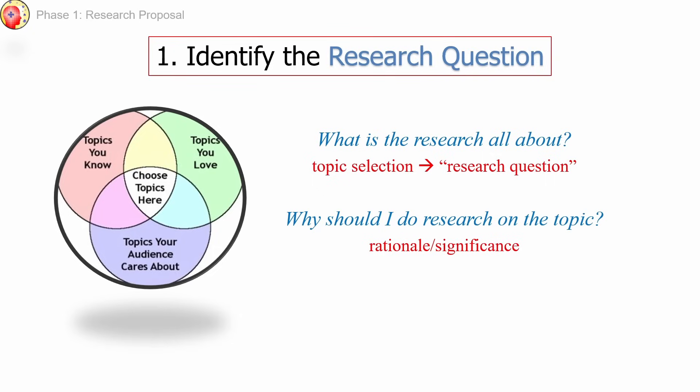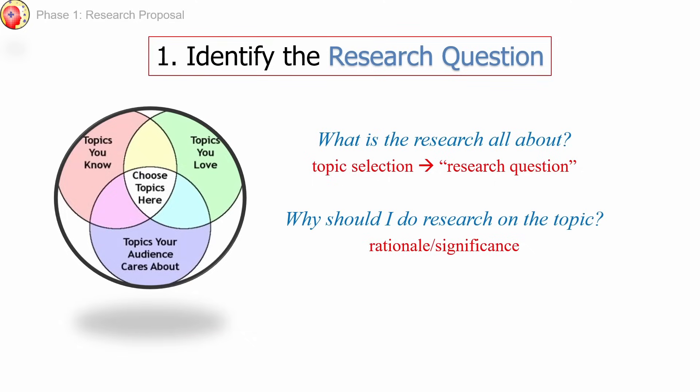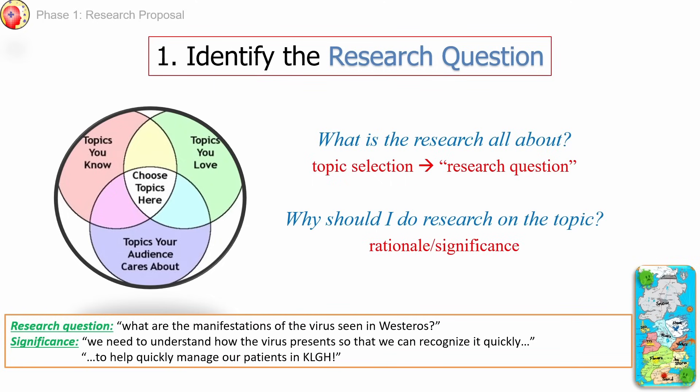Topic selection should lead to the so-called research question, which is often stated as a question about what your topic is all about. A sample research question from our scenario would be: What are the manifestations of the virus seen in Westeros? The significance of this research question is that we need to understand how the virus presents so we can recognize it quickly and help manage patients at King's Landing General Hospital.